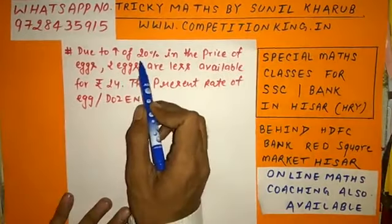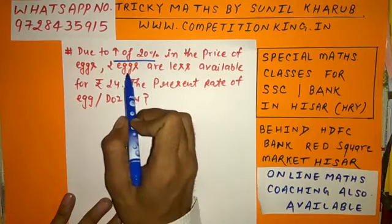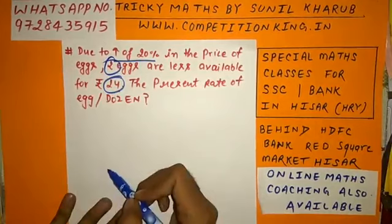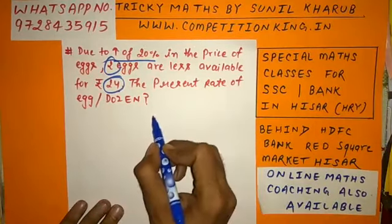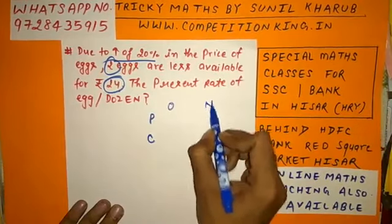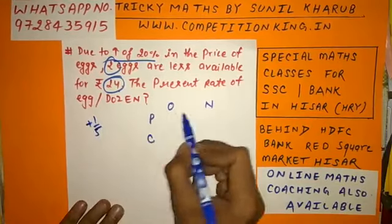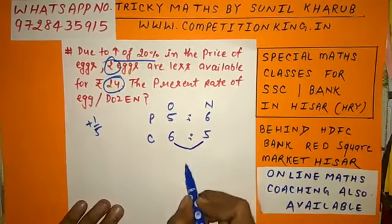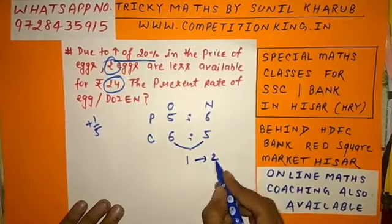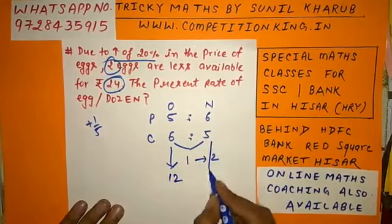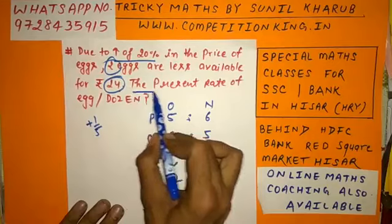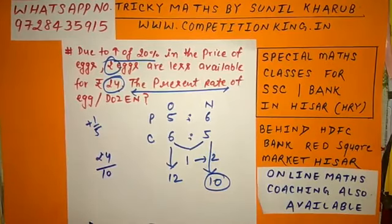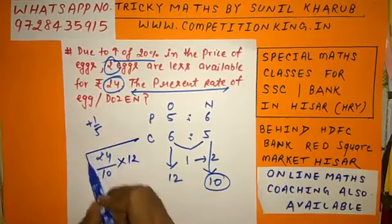See one more question: due to an increase of 20% in the price of eggs, 2 eggs are less available for Rs. 24. Find the present rate. Expenditure is same — price and consumption are inversely proportional. Price increasing by 20% means price ratio is 5 to 6, so consumption ratio is 6 to 5. Consumption is decreasing by 1 unit, actually decreasing by 2 eggs, so 1 unit = 2. Originally 12 eggs, now 10 eggs. He is asking about the present rate, so presently buying 10 eggs for Rs. 24, meaning 1 egg = Rs. 2.40. Dozen price = 12 × 2.40 = Rs. 28.80.